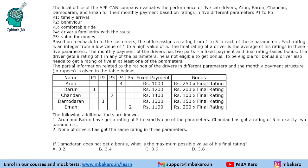The 5 parameters are given to us, however they are not asked in any of the questions, so you need not worry about which parameter is which. Based on feedback from the customers, the office assigns a rating of 1 to 5 in each of these parameters. Each rating is an integer from a low value of 1 to a high value of 5.